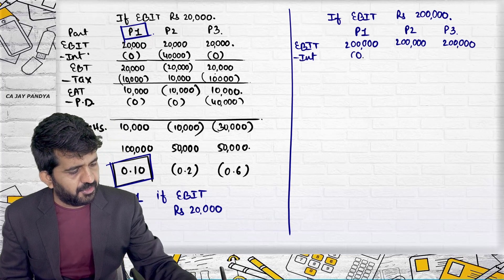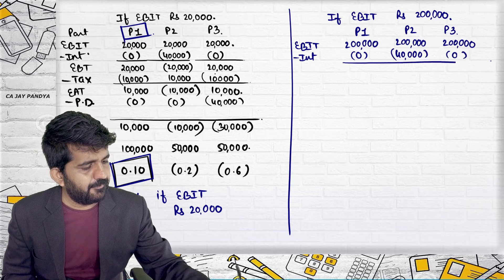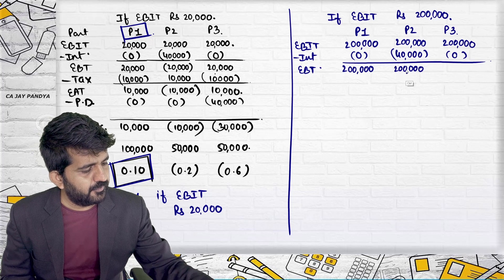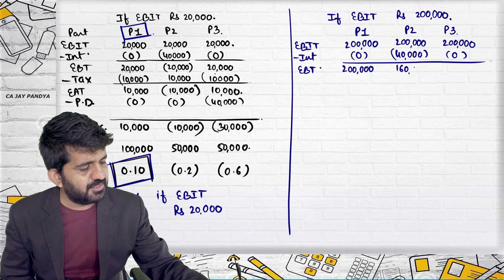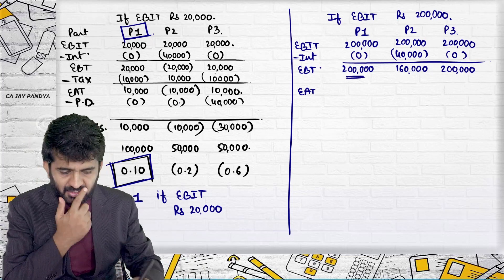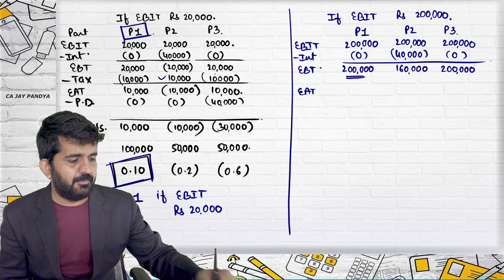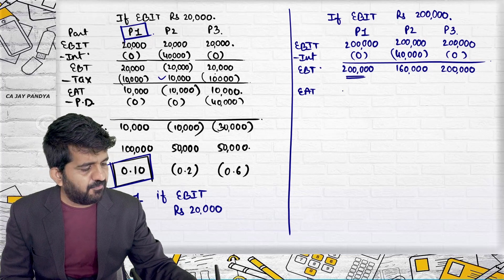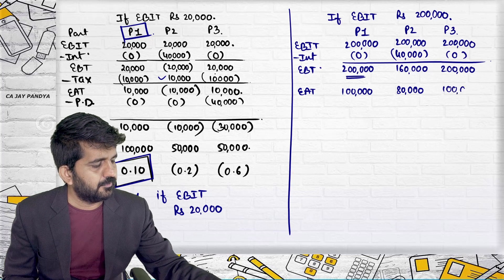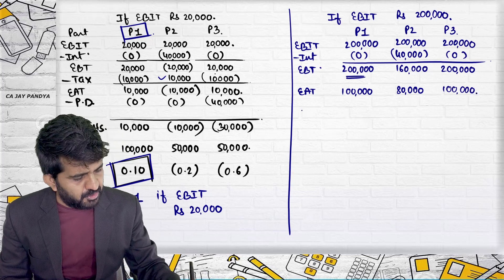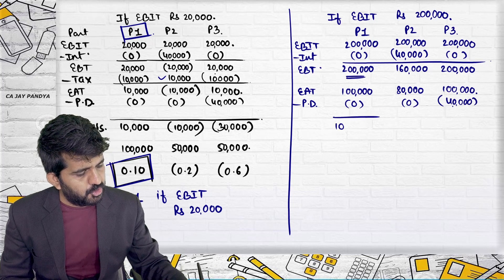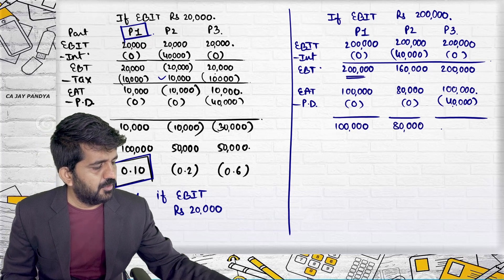Minus interest, I can copy down from here. Because interest, your plans are same. This is EBIT. EBIT will be 2 lakhs. 2 lakhs. 1,60,000. 2 lakhs. I directly find out EAT. EBIT into 1-T. Here there was a concept of some tax benefits. So I have not done 1-T. You can even do 1-T in that also. So 2 lakhs into 1-T will still remain 50%. 50% will be 1 lakh. This will be 80,000. This will be... First will come preference dividend. 0. 0. 40,000. This will be 1 lakh. This will be 80,000. This will be 60,000.